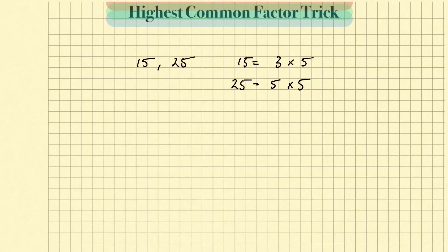If we circle one factor in the top, we have to have a matching one on the bottom. I can see the 5s match, but 3 and 5 do not match. So the greatest common factor equals 5.